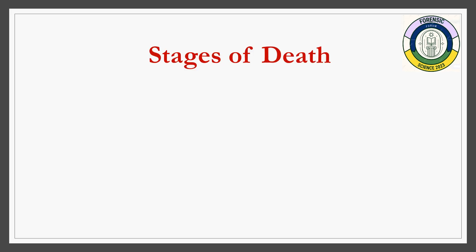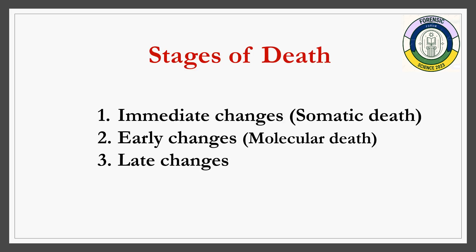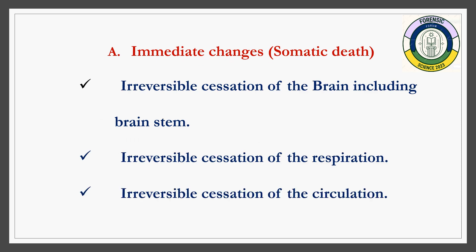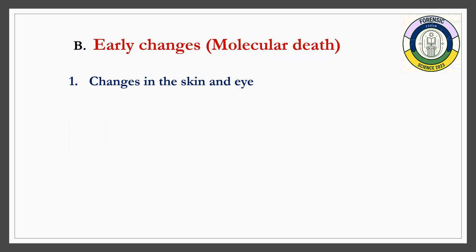Stages of death are basically three types: immediate changes, early changes, and late changes. Immediate changes are also called somatic death; early changes are also called molecular death. Somatic death is a permanent, irreversible death of an organism. According to Baker's criteria, permanent failure of the brain system, circulatory system, and respiratory system is called somatic death.